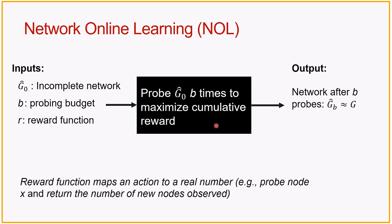The framework is: you give me an incomplete network, labeled as G-hat at time T0. I have a probing budget. This probing budget would be, for example, asking about a node if that is what my API access model allows. I have a reward function tied to the goal I have — this reward function basically maps an action to a real number, where an action is asking about Tina, and the reward is how much do I now know about the phenomenon given that I asked about Tina. Then we sequentially probe this incomplete network to maximize our cumulative reward, and at the end you output your network or the network and the function you were trying to learn.